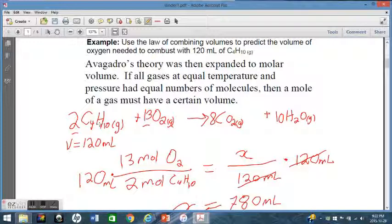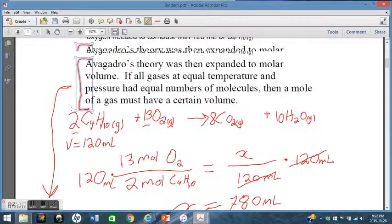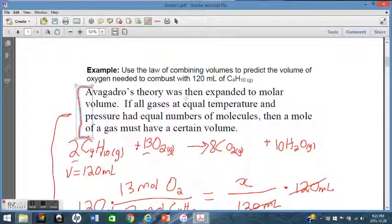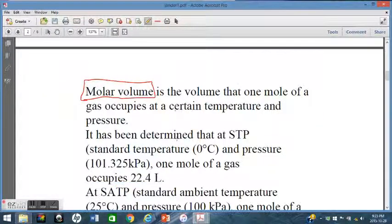Now, this got ahead of me here. This bit with Avogadro's theory actually goes with the next part, on the next page. So if you want to draw an arrow down to this, what we're saying here is that Avogadro's theory was expanded to molar volume. Basically, if we say all gases are at equal temperatures, and that equal temperature and pressure had an equal number of molecules, then a mole of a gas, of any gas, has to have a certain volume. So we give a definition to this. Molar volume is the quantity, and it's the volume that one mole of a gas occupies at a certain temperature and pressure.